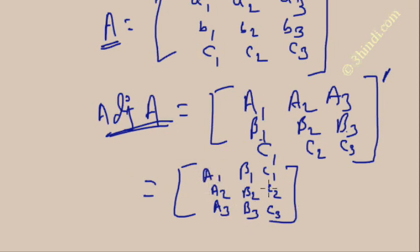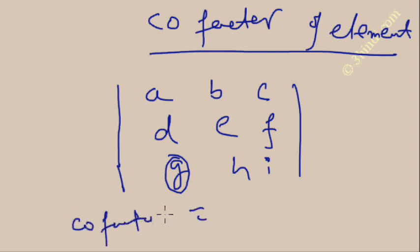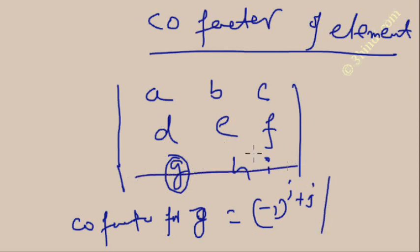These are the cofactors for each element. I will explain how to calculate the cofactors. A cofactor is basically a term from the determinant. To find the cofactor for any element — for example, cofactor for G — the formula is: cofactor for G equals minus one to the power i plus j, where i is the row number and j is the column number for that element. Then find the determinant of the remaining elements after removing the row and column in which G is present.